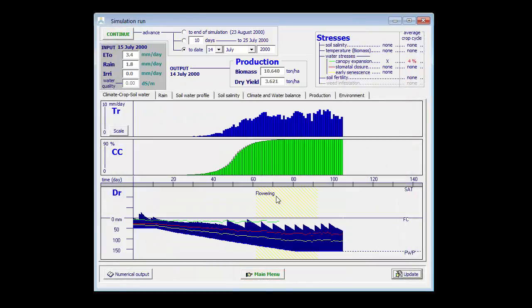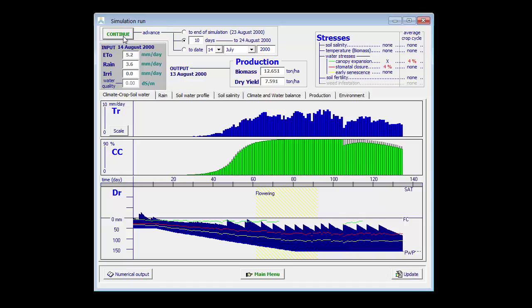I return to my simulation result and now continue my simulation with the updated canopy cover and biomass production. At the end, I get maybe a better estimate of the final yield since I consider the hailstorm.